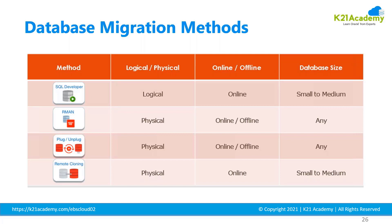SQL Developer is suitable for small to medium data loads. RMAN allows you to take a hot backup of your databases. Plug-unplug is available for pluggable databases from 12c onwards. However, most of these methods are not directly applicable for EBS database migration because EBS has specific requirements, including for remote cloning.